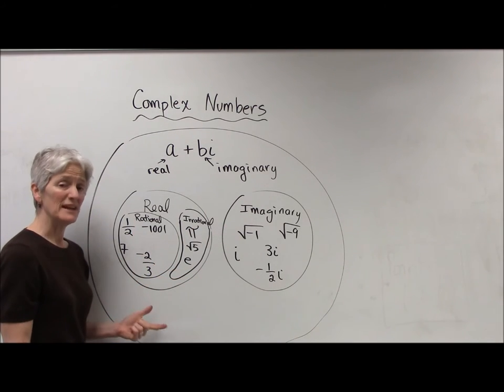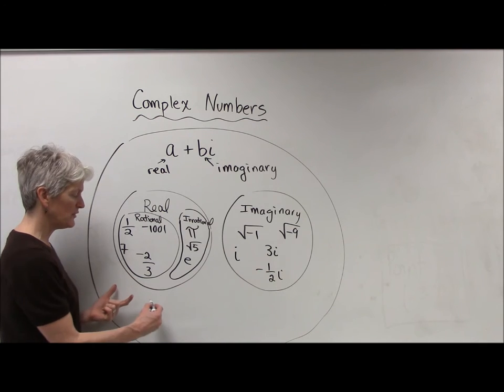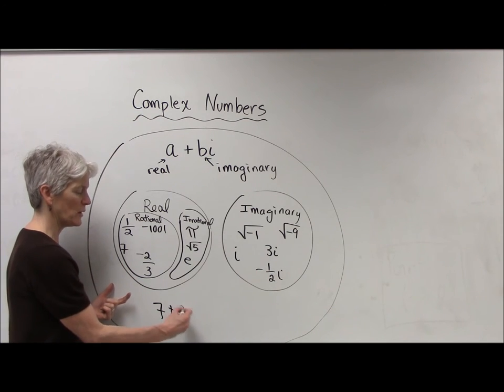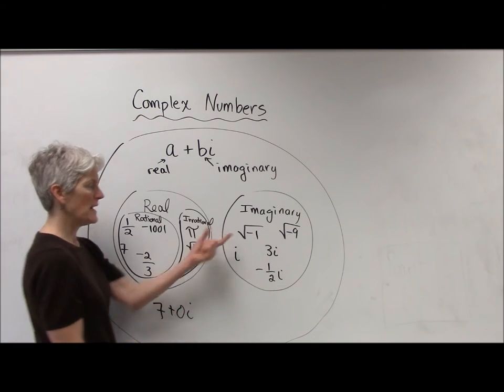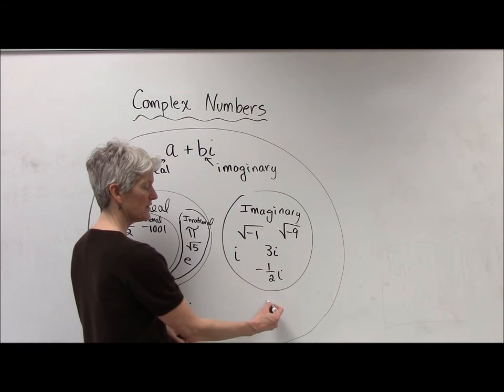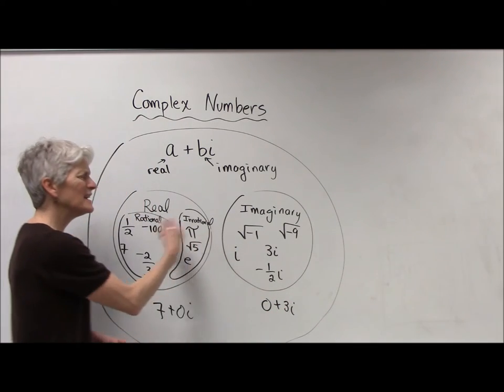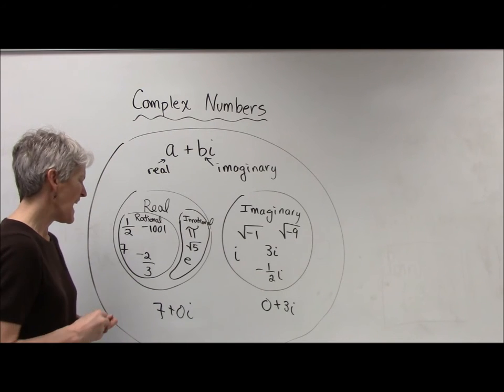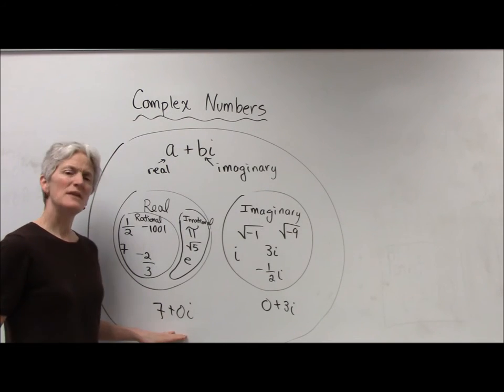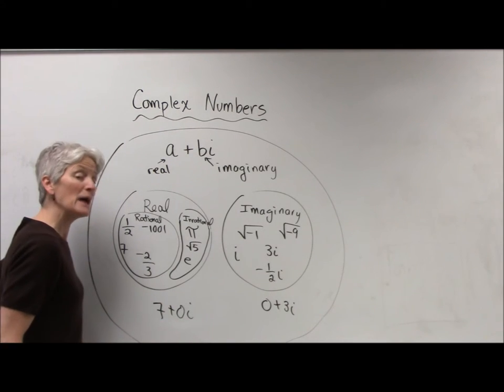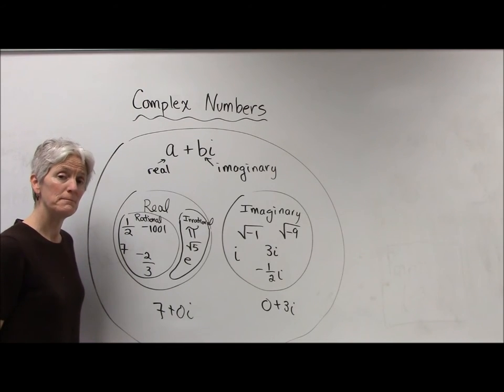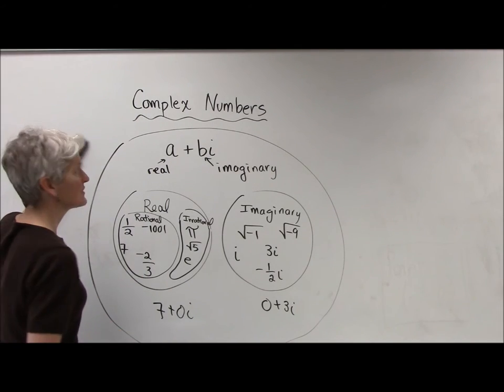So seven is actually a complex number because you could write it as seven plus zero i, right? Imaginary number is three i. Zero plus three i. So every real number, every imaginary number is actually a complex number that can be written in the form a plus bi. So those are complex numbers.